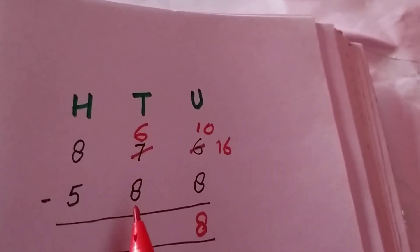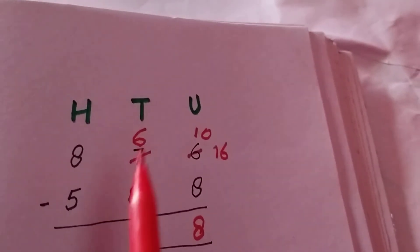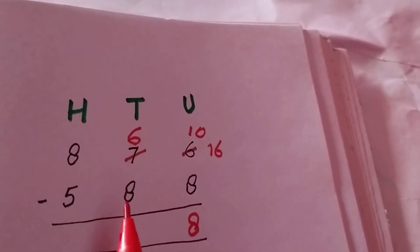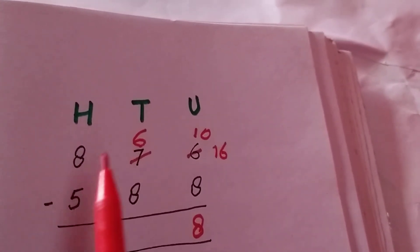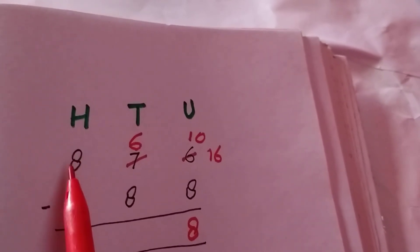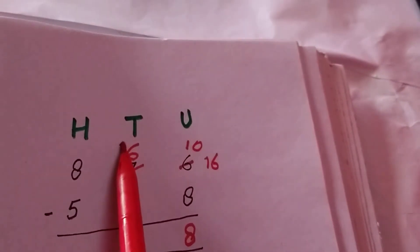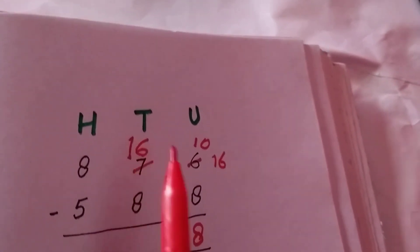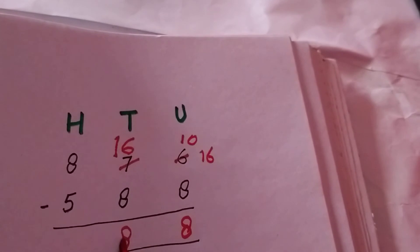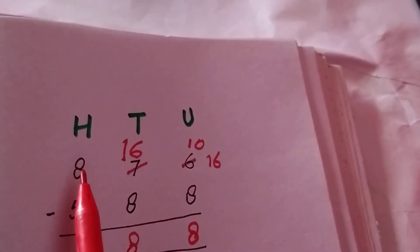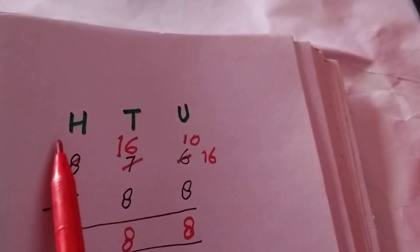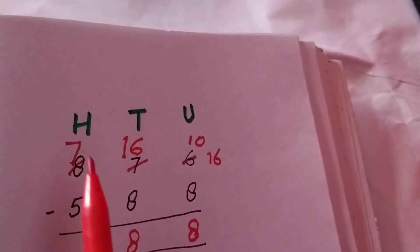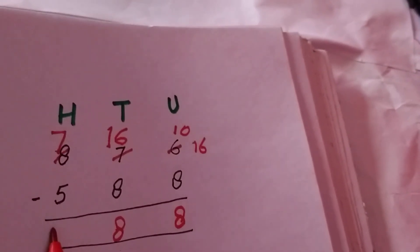Six is smaller than eight, so eight is greater. We borrow tens from eight. It becomes sixteen. We subtract eight from sixteen — the answer is eight. The remaining is seven. We subtract five from seven. The answer is two.